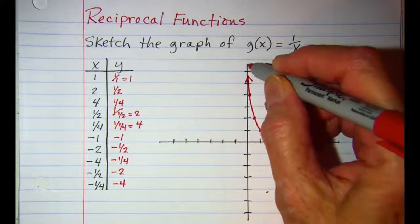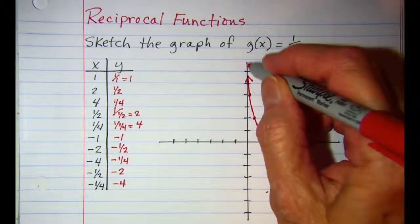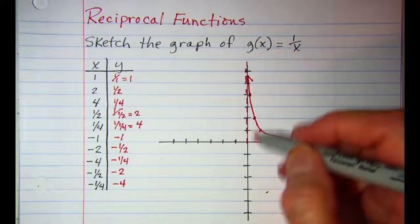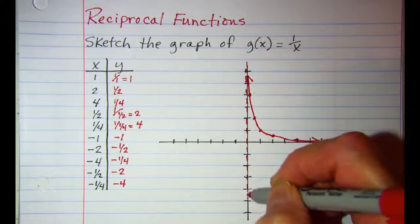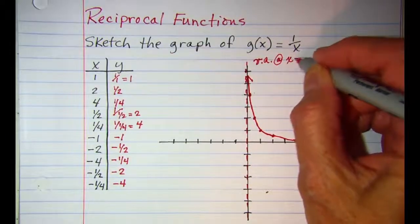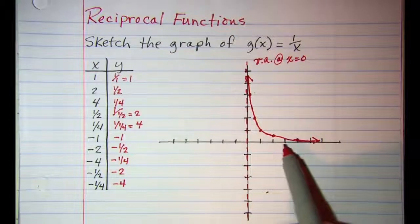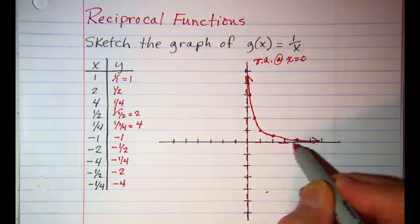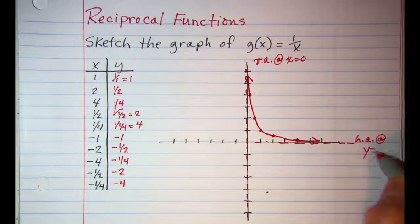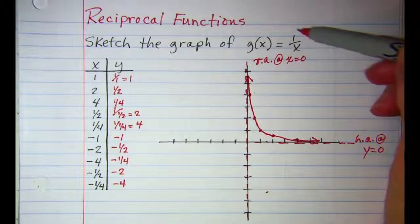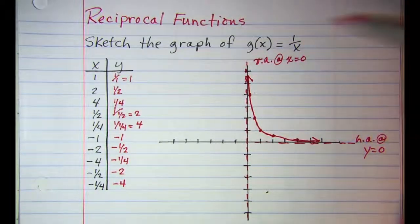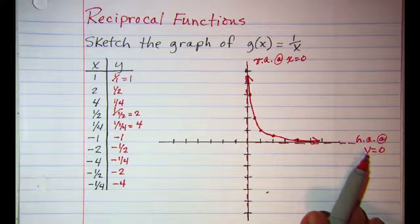We have a vertical asymptote at x equals zero because if x is zero then we have division by zero, which is undefined. So x cannot equal zero, giving us a vertical asymptote at x equals zero. We also have a horizontal asymptote at y equals zero, mainly because there's no way this fraction would ever equal zero — the only way it would equal zero is if the numerator is zero, and the numerator is one. So our horizontal asymptote is y equals zero.